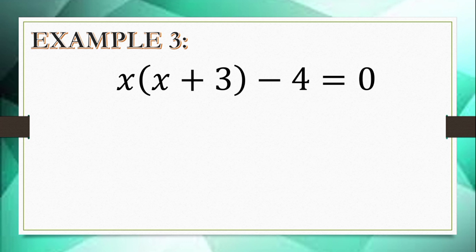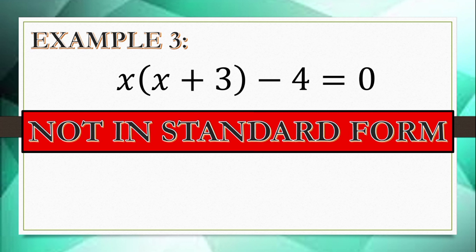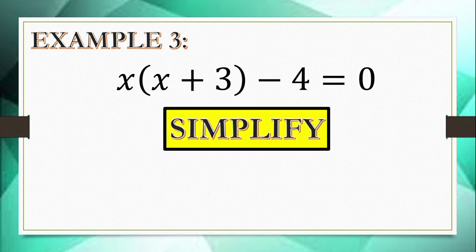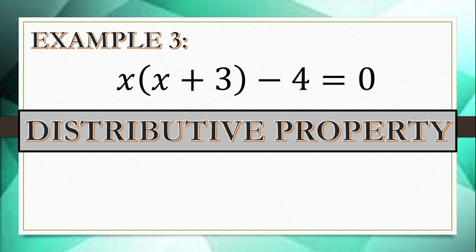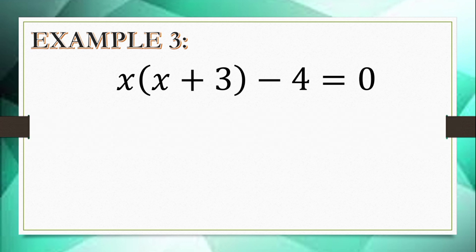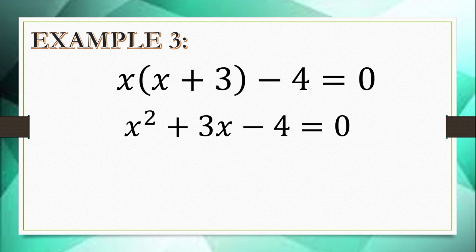Let's have example number 3: x times the quantity (x plus 3) minus 4 equals 0. This is not written in standard form. Let's simplify using the distributive property — distribute x to the terms inside the parenthesis. We get x² plus 3x minus 4 equals 0. This equation is now in standard form.